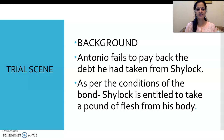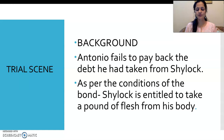Now let us come to the trial scene. Before writing its importance, we need to look at the background of the scene — what happened before it, and how Antonio and Shylock landed in court. The background is this: Antonio fails to pay back the debt he had taken from Shylock, and as per the conditions of the bond they had signed, Shylock is entitled to take a pound of flesh from his body.